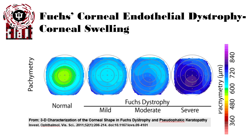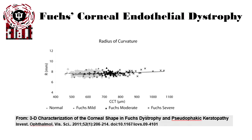Here's an example of a normal cornea, which has about 550 microns of corneal thickness overall. With Fuchs dystrophy, as severity increases, the corneal thickness increases to 600, 700, or 800 microns. This ultimately changes the radius of curvature of the cornea.